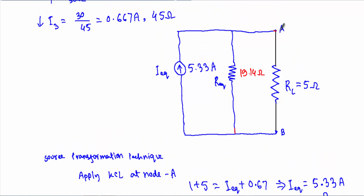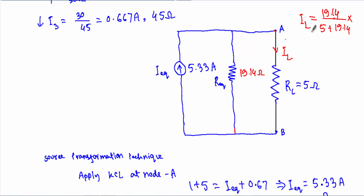Now I have to calculate the current through the 5 ohm resistor RL, which is our I_L. To calculate I_L, I take R_equivalent (19.14) divided by the sum of resistances (5 plus 19.14), and multiply this fraction by the total current 5.33. Performing the calculation, the current I_L equals 4.22 ampere, which is quite similar to our simulated result. That's it, thank you.